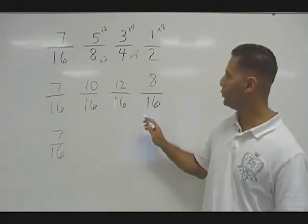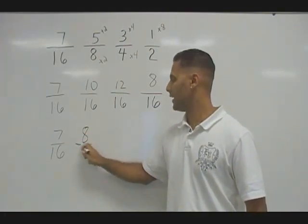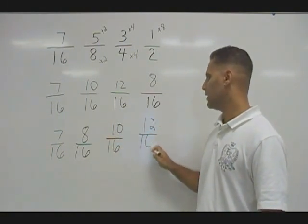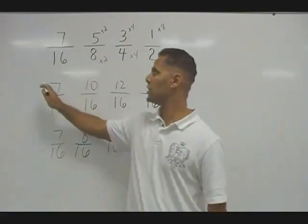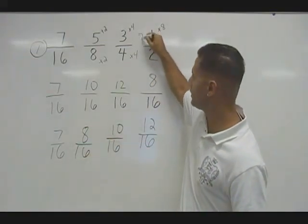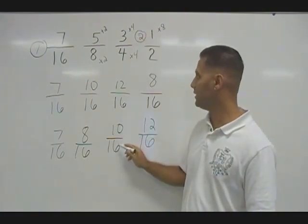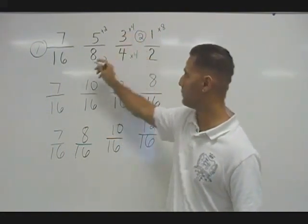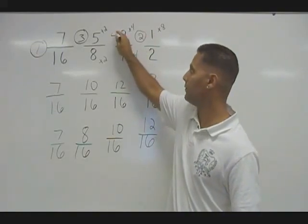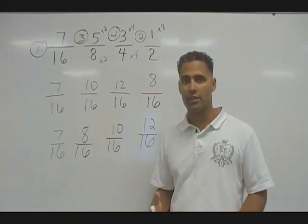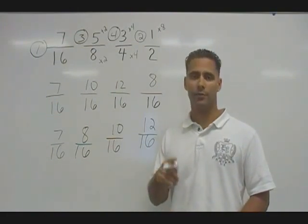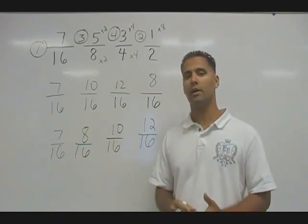Seven sixteenths was already listed first. Next, we will have to write eight sixteenths, then ten sixteenths, and twelve sixteenths last. Now notice the first fraction that seven sixteenths came from was this one, so I'm going to put a number one right by seven sixteenths. Eight sixteenths came from one half, so this fraction goes second. Ten sixteenths is equivalent to five eighths, so I'm going to put that third. And the largest fraction, twelve sixteenths, came from three fourths, so we put that fourth. When ordering and comparing fractions, one strategy is to find the lowest common denominator, and make sure to also change your numerator by whatever factor the denominator increased, so then you can make a very precise comparison.